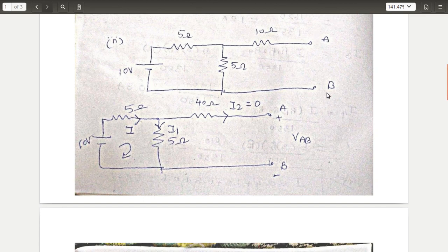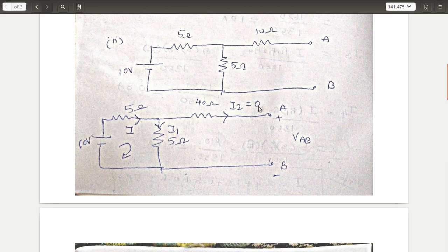Similarly, for the second problem, you also have to find the voltage across terminal A and B. I have taken current I flowing clockwise. At a node, it splits into two branches: I1 and I2. Since terminal A and B is open, there is no current in that branch, so I2 = 0.